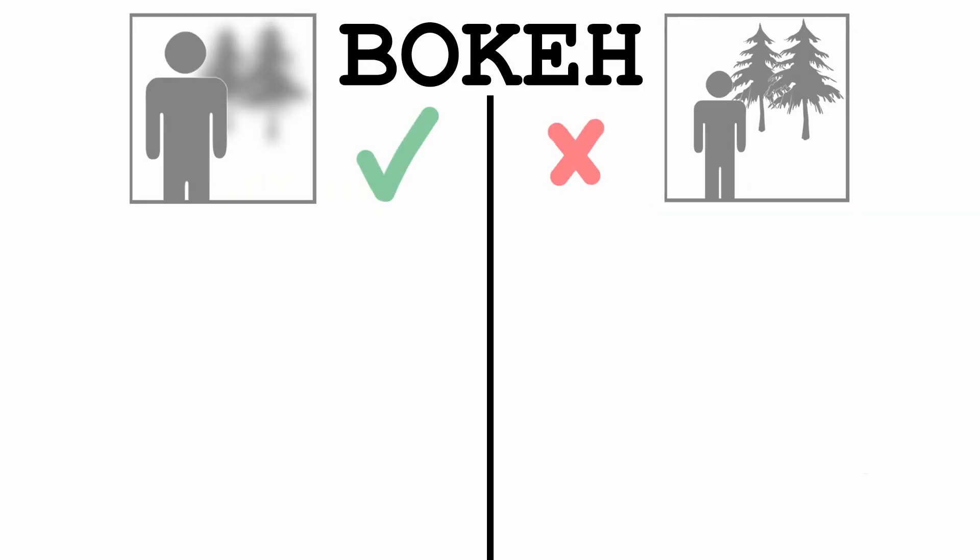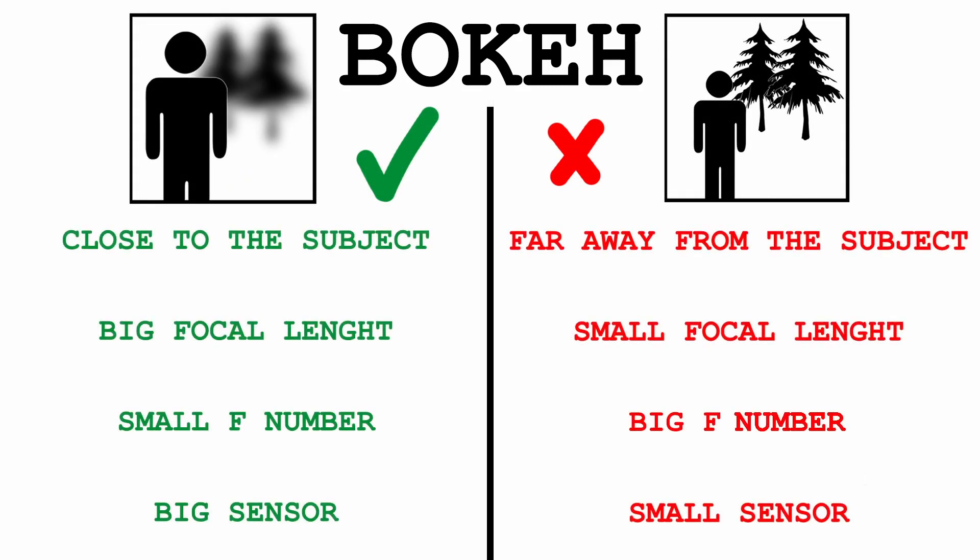Now is the time for me to deliver on that promise. To get the maximum bokeh, you must be close to the subject, use the lens at a big focal length, have a small aperture value, and a big sensor. Bokeh is not obtained if we have the opposite things. I told you it would get easy! If this video was useful and I delivered on my promise, have a minimum interaction with this video and press that like button — it only takes a second. This was bokeh explained in the easy way.